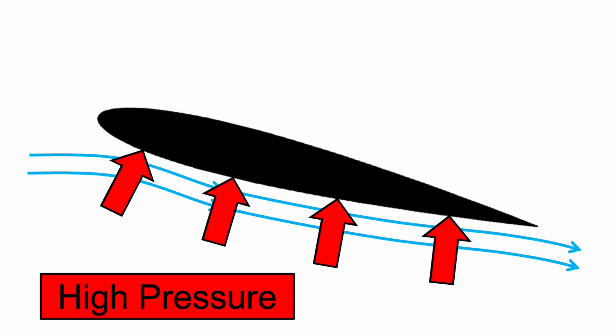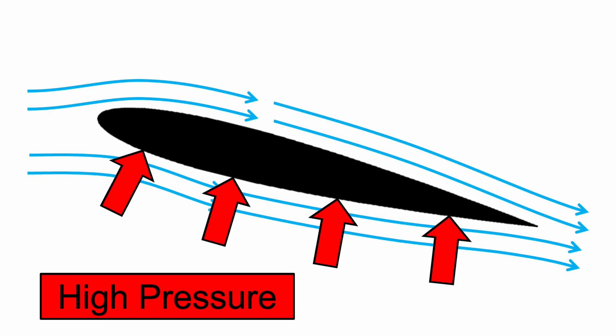As the angle of attack is increased, air striking the bottom of the airfoil has a force exerted on it to deflect it downwards. The air then exerts an equal and opposite pressure force on the bottom of the airfoil that is greater than the free stream pressure, as denoted by the red vectors pointing towards the surface. Meanwhile, on the top of the airfoil, the air curves around the top surface and flows downwards as well.